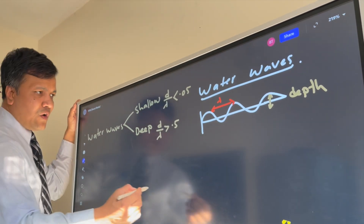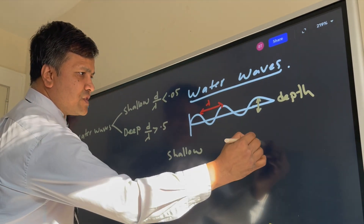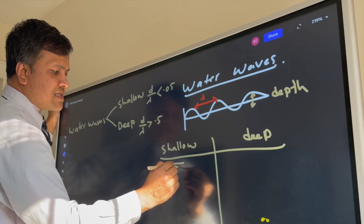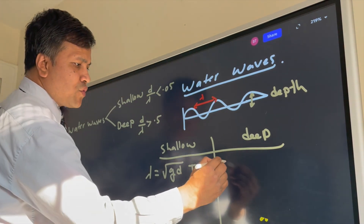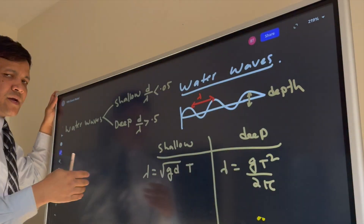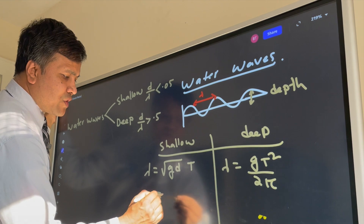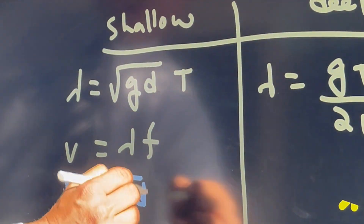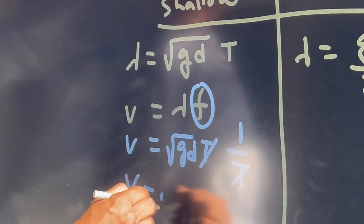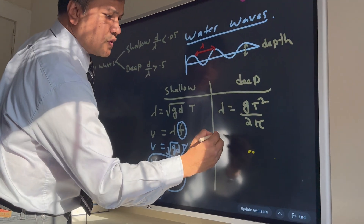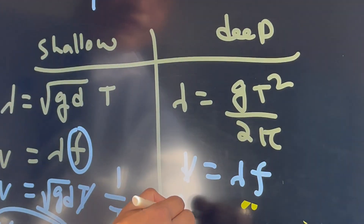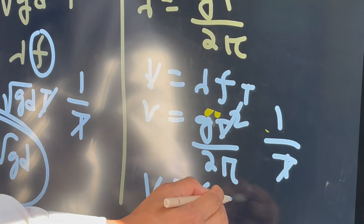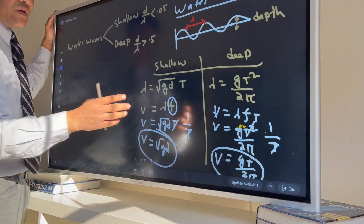Let's write down the formulas. For shallow water, the wavelength λ = √(gd) · T, and the velocity = √(gd). For deep water, the wavelength λ = gT²/(2π), and the velocity = gT/(2π). We derive the velocity using v = λf, and since f = 1/T, the T terms cancel in each case to give these results.